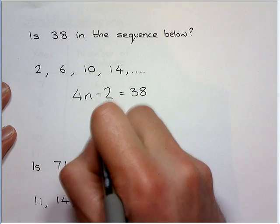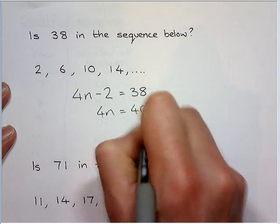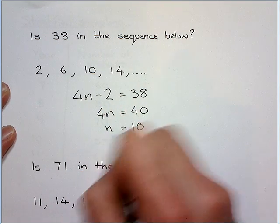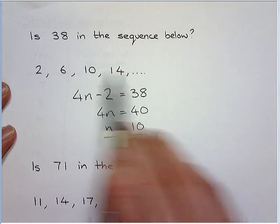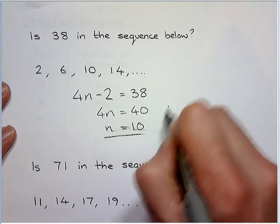Now you form an equation. So 4n is equal to 40, and therefore n is 10. And this means yes it is because it's the 10th number along. So therefore yes.